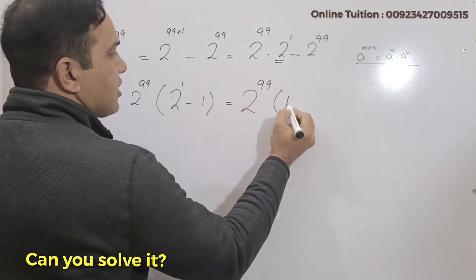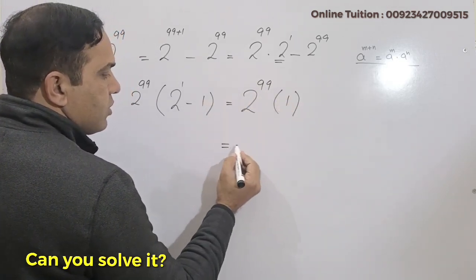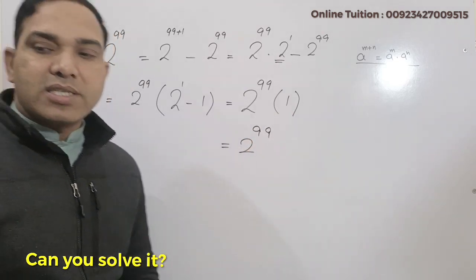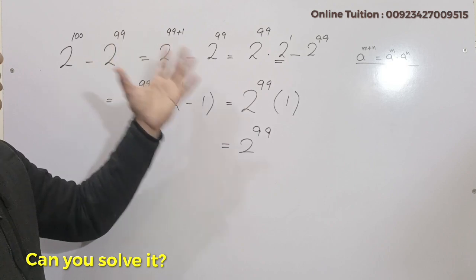times 2 minus 1 equals 1, so 2 raised to power 99 is the simplest answer of this question: 2 raised to 100 minus 2 raised to 99.